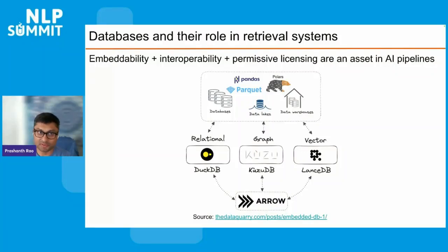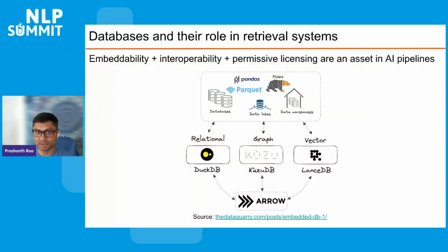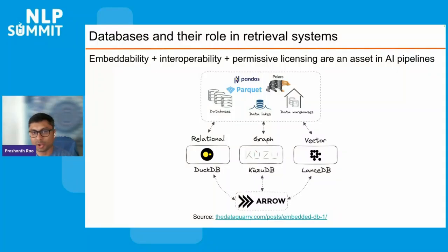It's important to highlight the role of databases in information retrieval systems. There are many kinds of databases, and in recent times a new class of embedded databases has emerged. I'm listing three names here: DuckDB, Kuzu — which is the company I work for — and LanceDB. Each of these three databases is embeddable, highly interoperable with the data ecosystem and the Arrow format, which is a columnar data format that is highly scalable. Modern systems that are scaling both data engineering pipelines and the downstream retrieval portion of the pipeline rely on tools that can scale to meet the needs of these applications, and embeddability is a big asset in these situations.